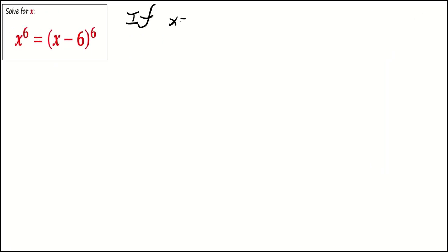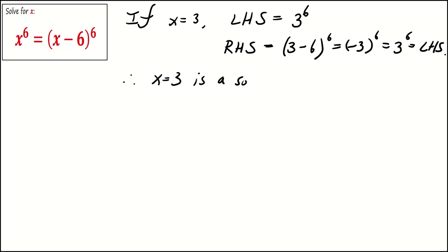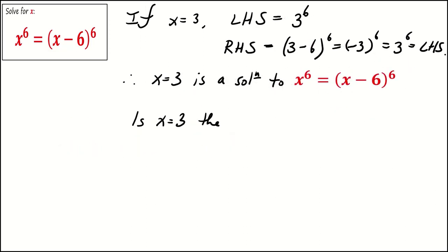Upon inspection, if x equals 3, then the left hand side is 3 to the power 6, while the right hand side is 3 minus 6 to the power 6, which equals 3 to the power 6. This means that x equals 3 is a solution to the equation. The only question is: is x equals 3 the unique solution?